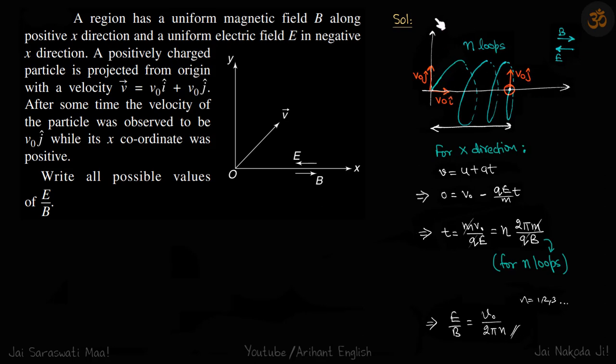This is the x-axis, this is the y-axis, and the particle is launched at 45 degrees to both. The magnetic field is towards right and the electric field is towards left.